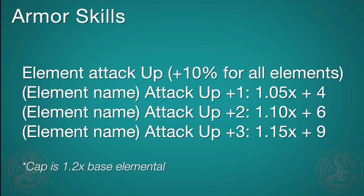There are two armor skills that affect the damage your elemental shots do. There's a blanket one called Elemental Attack Up, available later in the game, which increases your elemental damage for every element by 10%. Then there are the more utilized specific element attack skills, like Dragon Attack Up or Ice Attack Up. These have three tiers: Elemental Attack +1 gives 5% more damage plus 4 element; +2 gives 10% plus 6; and +3 gives 15% increase plus 9. Note that there is a cap of 1.2 times your base elemental damage when it comes to boosting.